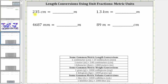The first step is to write 235 centimeters as a fraction with a denominator of one. Now looking at the conversions, notice that one meter is equal to 100 centimeters, and therefore we can use this conversion to form a unit fraction that will convert centimeters to meters.